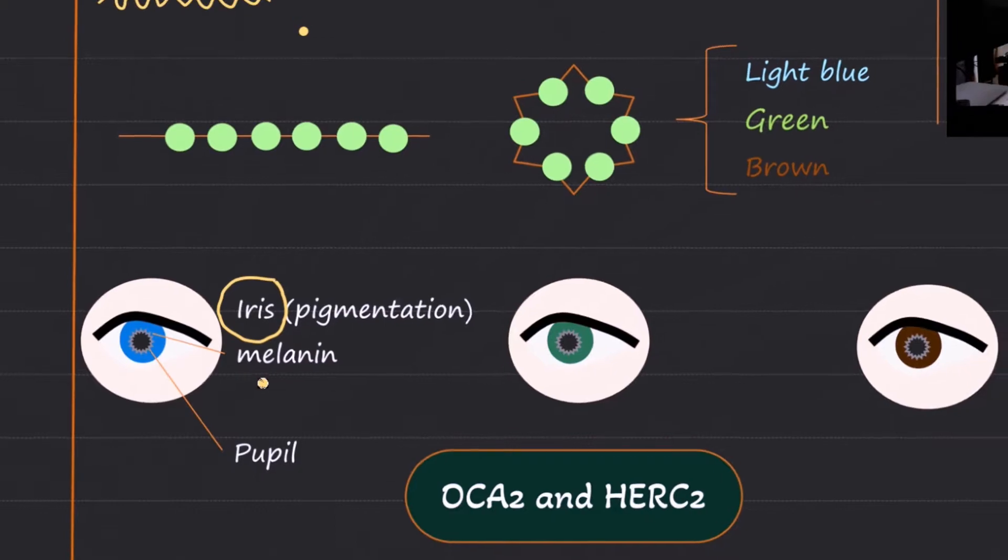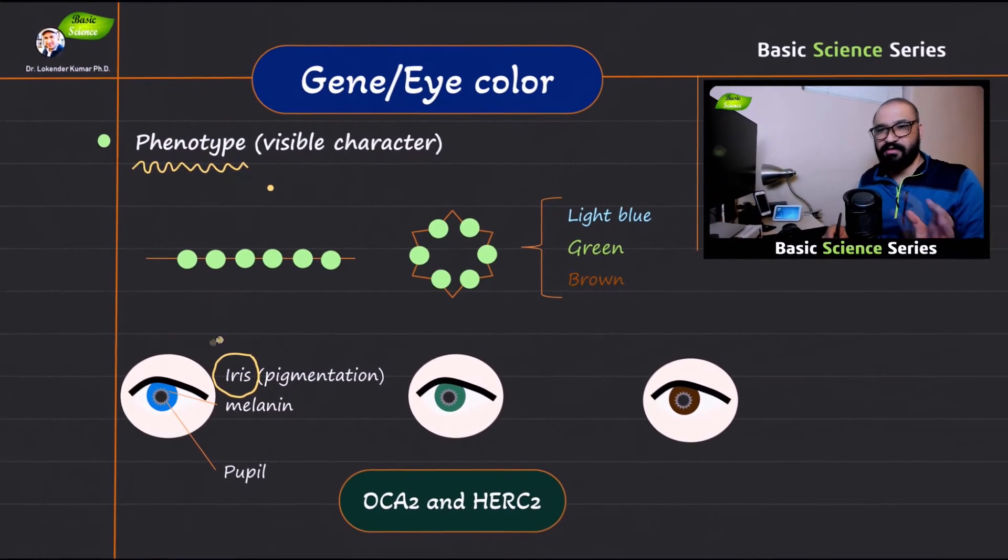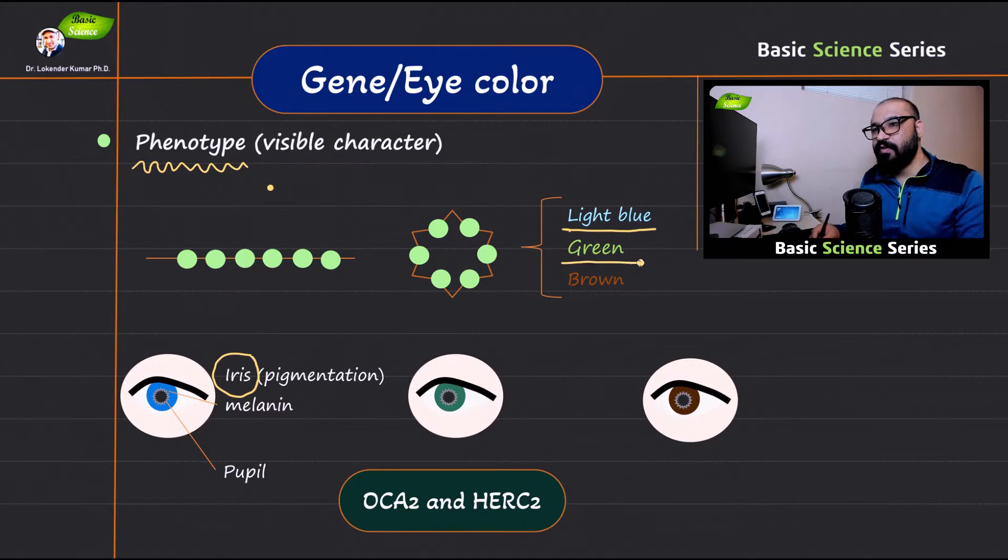So basically the pigmentation in the iris is responsible for the different colors. Basic colors are light blue, green color and brown and then you have different shades of these colors.